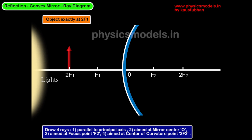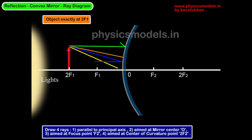Now let's take an object exactly at 2F1. We're trying to bring the object closer to the mirror. We do the same thing, bring the lights from the left and we draw the same four rays.